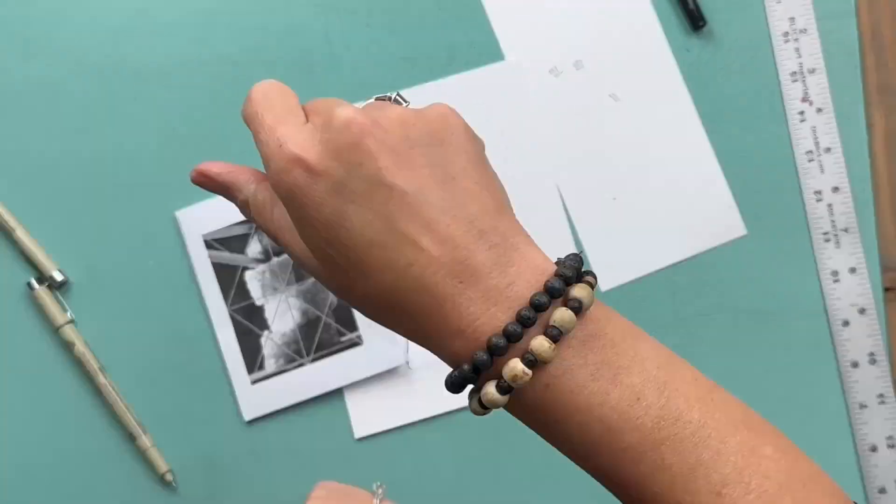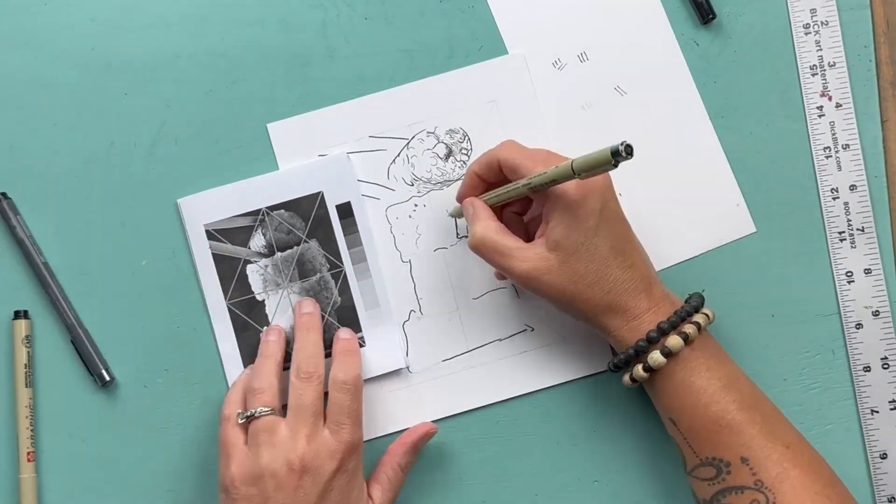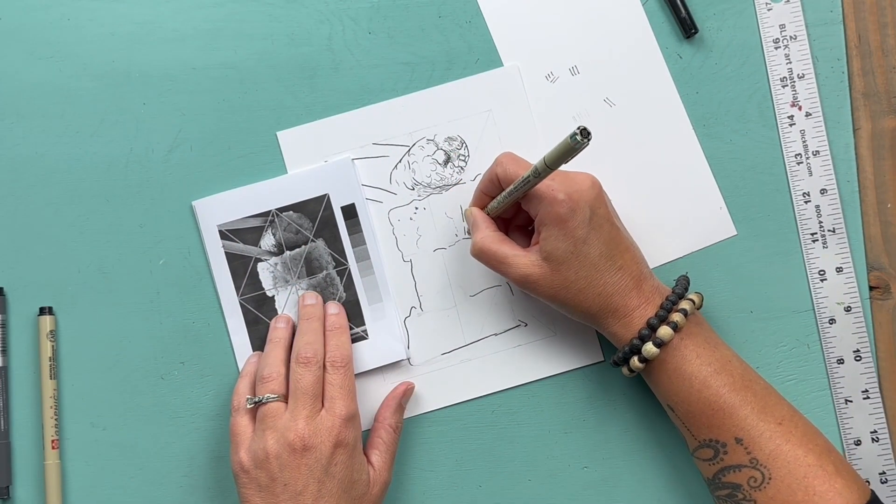Then I'm going to take the fine point pen and use some of those hatching techniques to fill in the values and get those shadows.